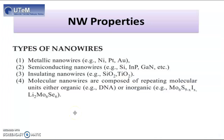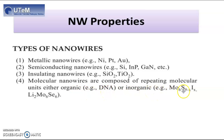We have many types of nanowires. For example, metallic nanowires — nickel, platinum, and gold. Semiconducting nanowires, for example, Si, InP, GaN, etc. Insulating nanowires, for example, silicon dioxide and titanium dioxide. Molecular nanowires, which are composed of repeating molecular units — they may be either organic, for example DNA, or inorganic. This is the general formula of an inorganic nanowire.